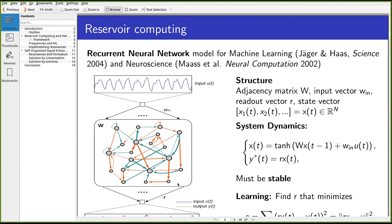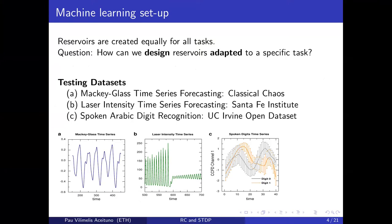In reservoir computing there is a trend toward creating good reservoirs — papers look for metrics and ways to ensure the dynamics are rich enough to capture many properties, so reservoirs work across a wide range of tasks. This goes against specialization, since one would expect that to do well at a particular task you need to specialize in it, and that is what this first part of the presentation addresses.